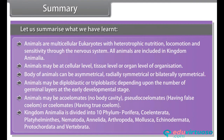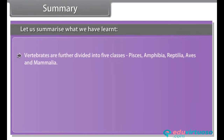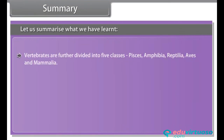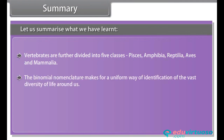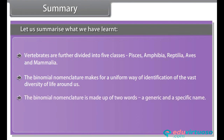Kingdom Animalia is divided into 10 phyla: Porifera, Coelentrata, Platyhelminthes, Nematoda, Annelida, Arthropoda, Mollusca, Echinodermata, Protochordata, and Vertebrata. Vertebrates are further divided into 5 classes: Pisces, Amphibia, Reptilia, Aves, and Mammalia. The binomial nomenclature makes for a uniform way of identification of the vast diversity of life around us. The binomial nomenclature is made up of two words: a generic and a specific name.